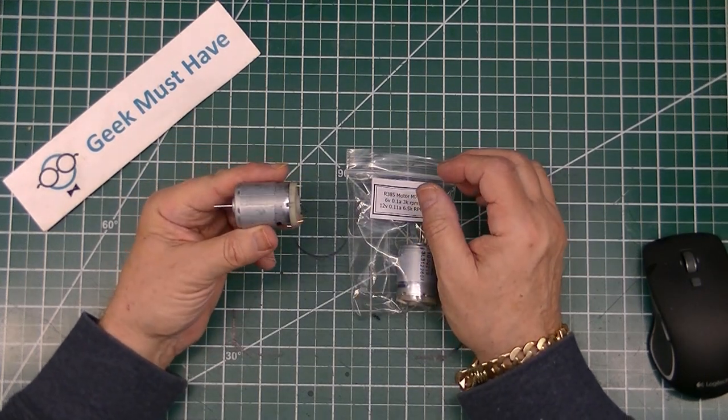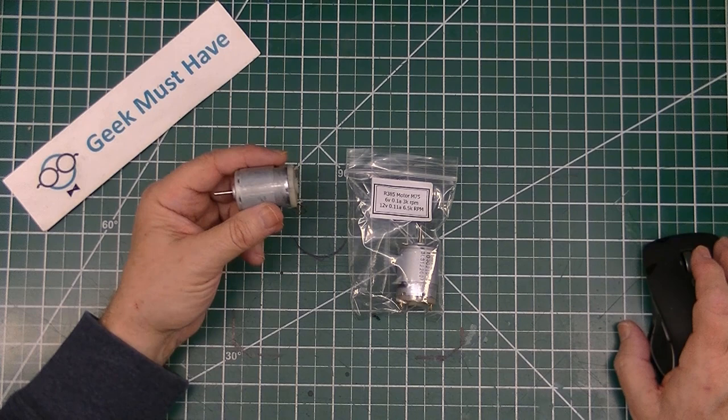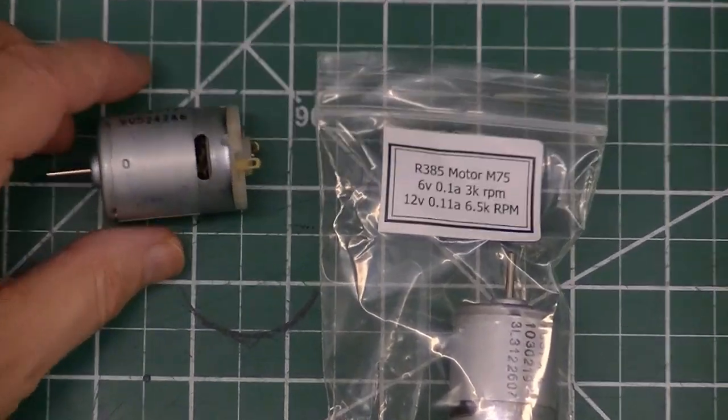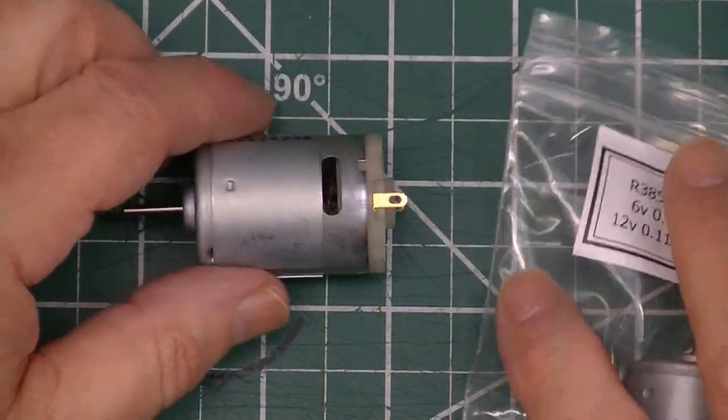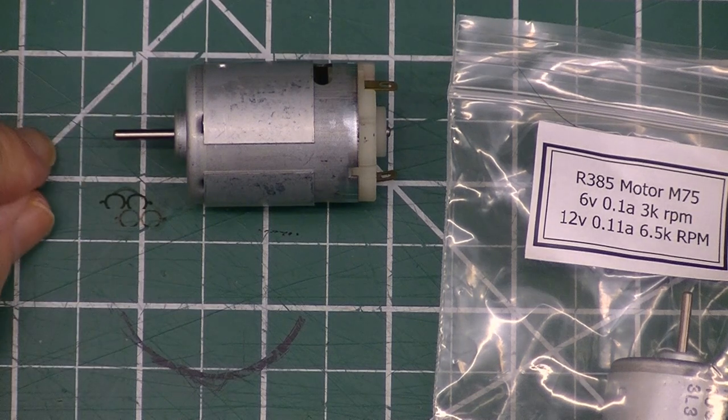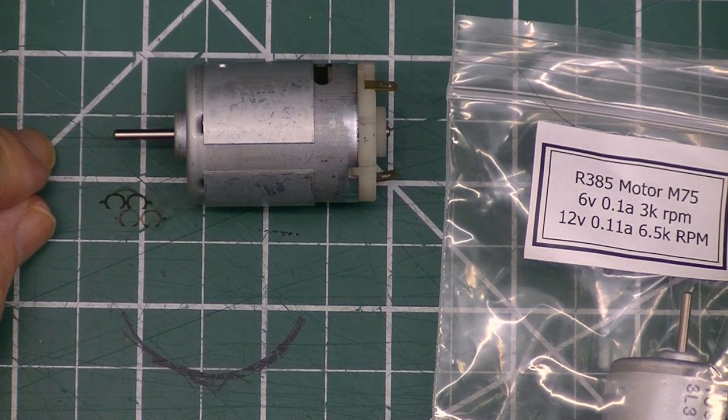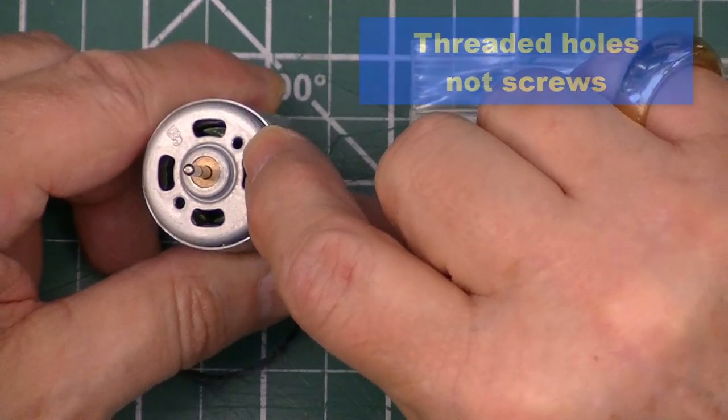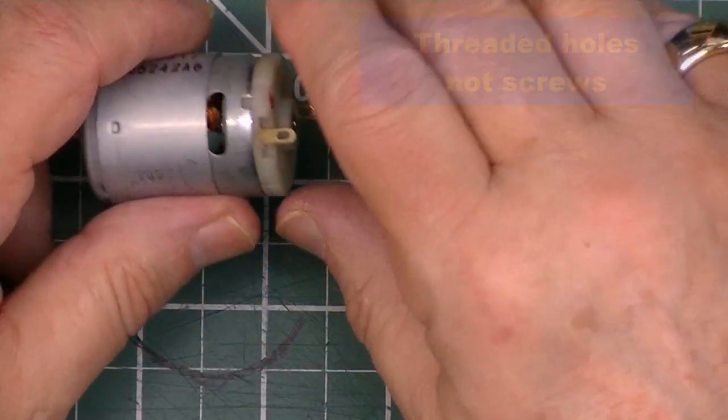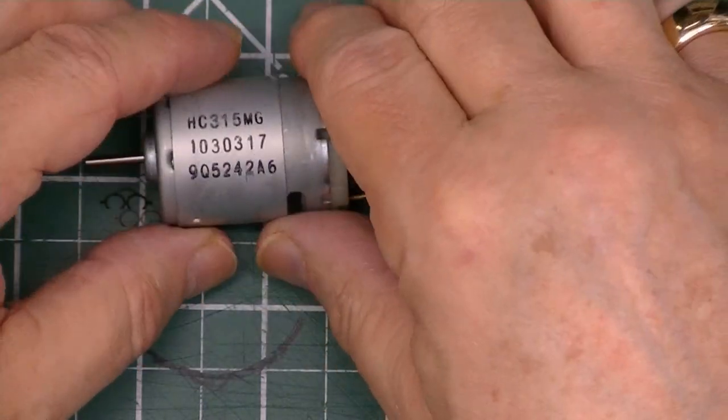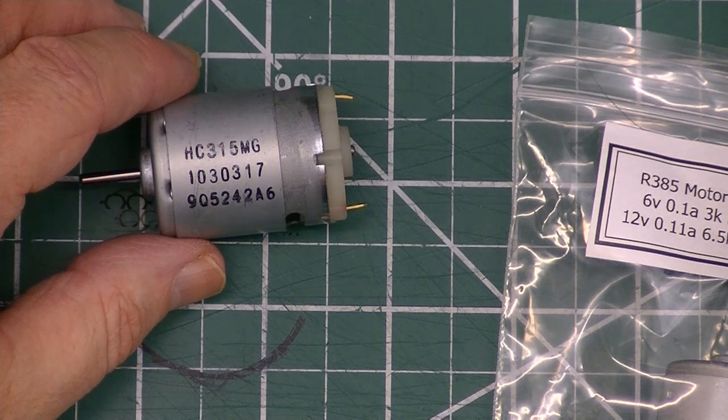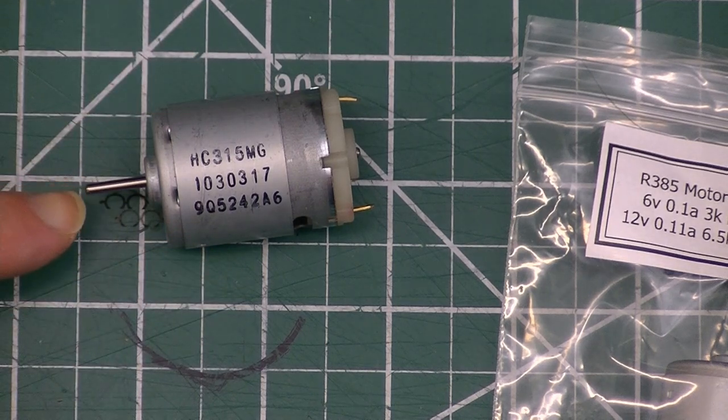This item is the bigger brother to that R140. This is an R385 motor. It runs on 6 to 12 volts and goes anywhere from 3,000 RPM to 6,500 RPM. It does have some M2.5 screws in the front and unthreaded ones in the back that you could use. But this is a higher torque motor, very popular motor for a lot of projects. The shaft on this is 2.3 millimeters.